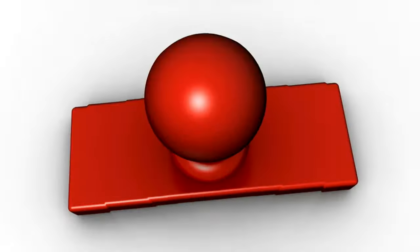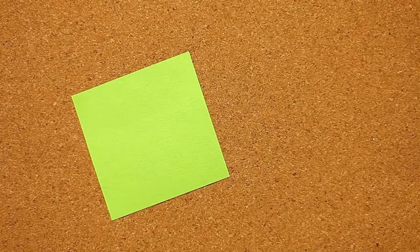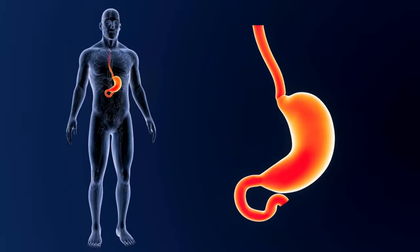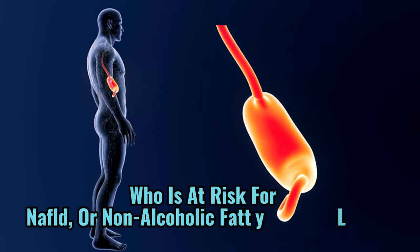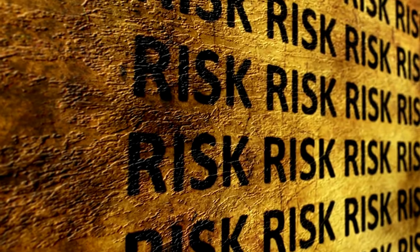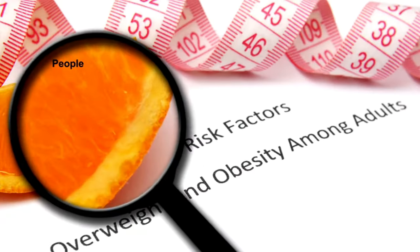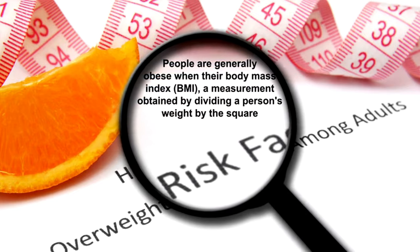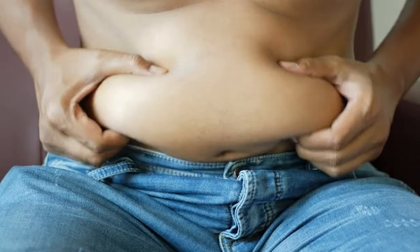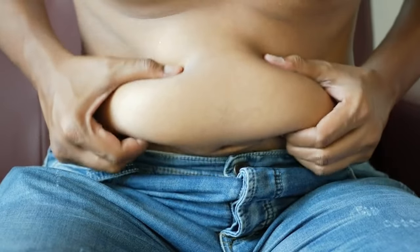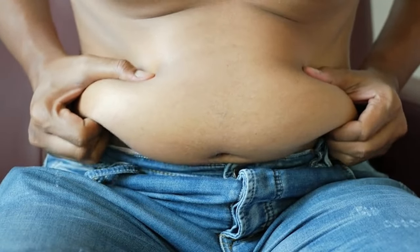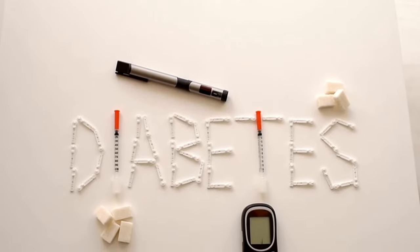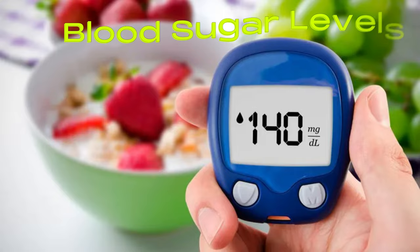Who is at risk for NAFLD? Identifying the key risk factors is essential in understanding who may be more vulnerable. One of the most significant risk factors is obesity or being overweight, which is increasingly prevalent among adults globally. Excess weight, particularly around the abdomen, contributes to fat accumulation in the liver. Another major risk factor is diabetes — especially type 2 diabetes or prediabetes — which impacts the body's ability to regulate blood sugar levels, leading to fatty deposits in the liver.